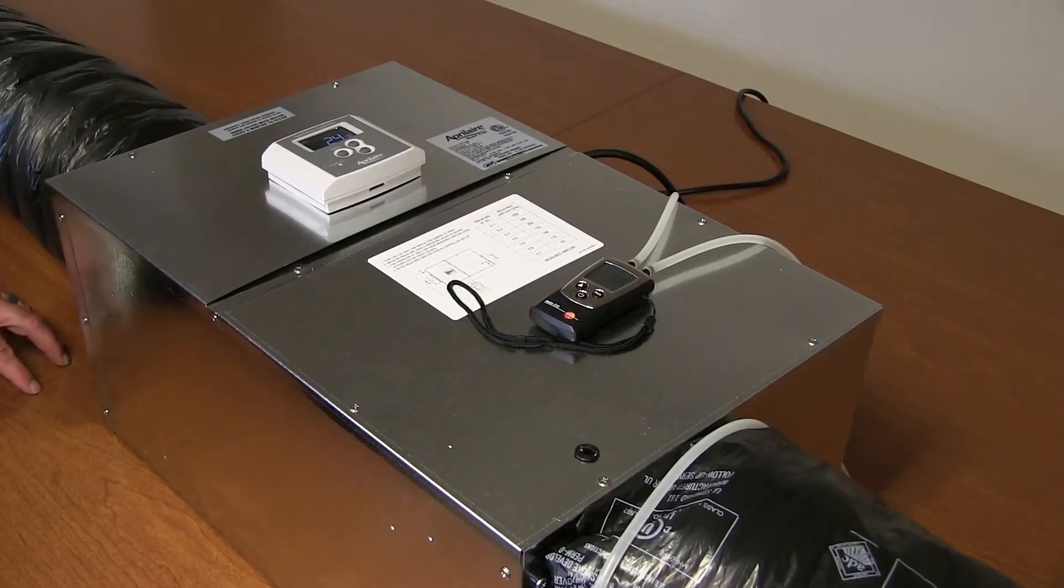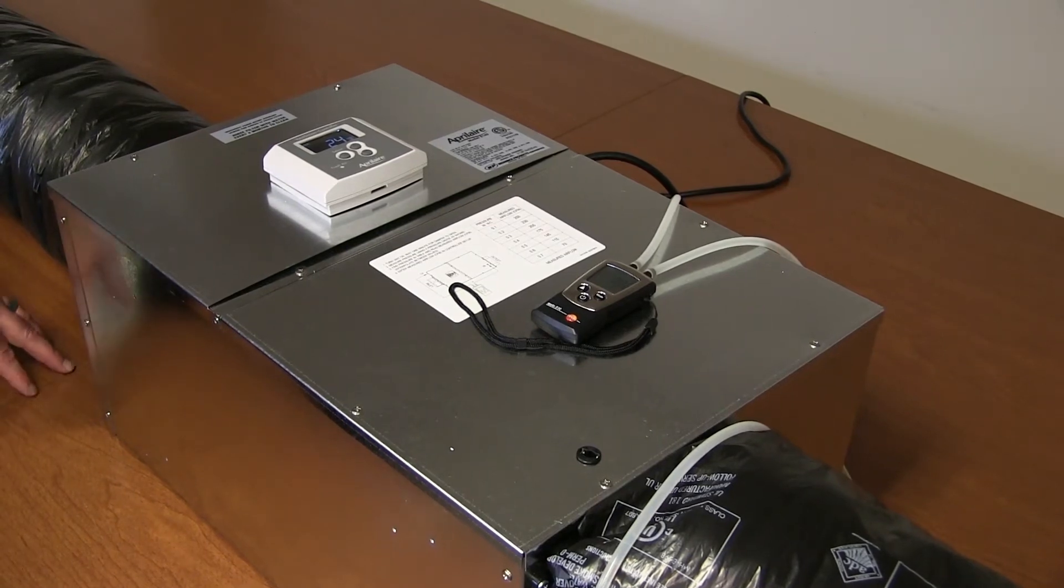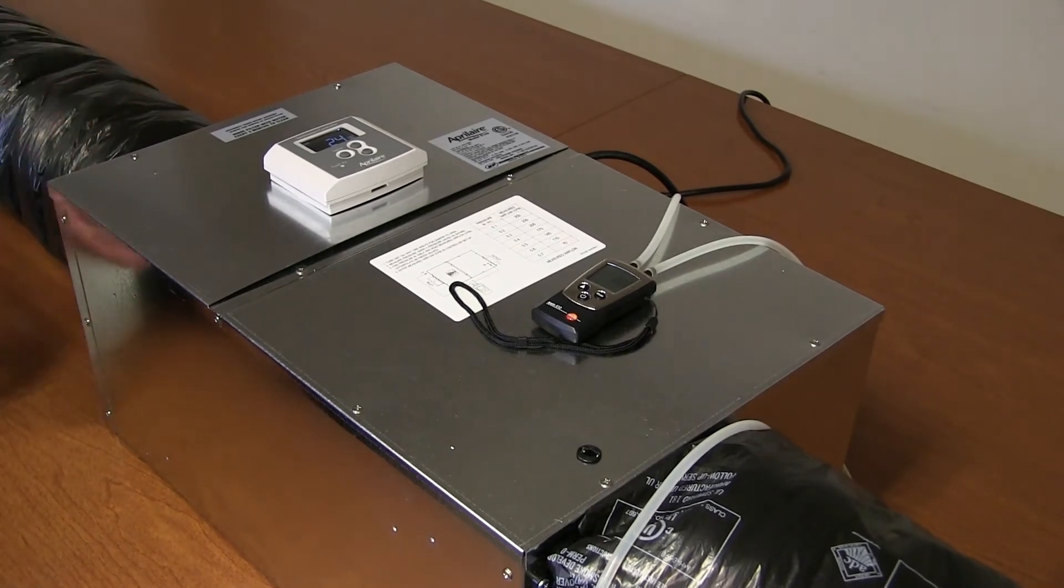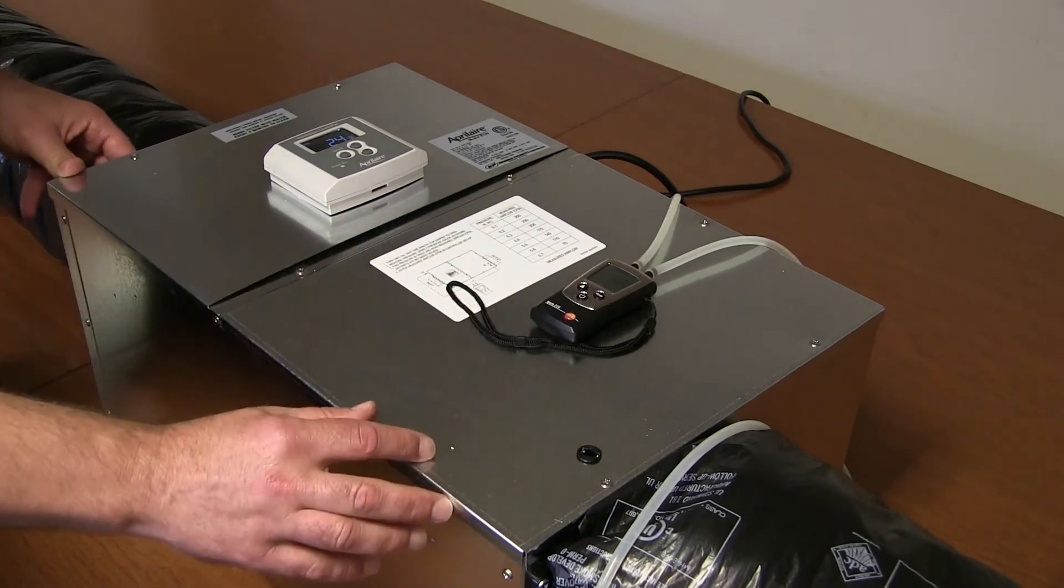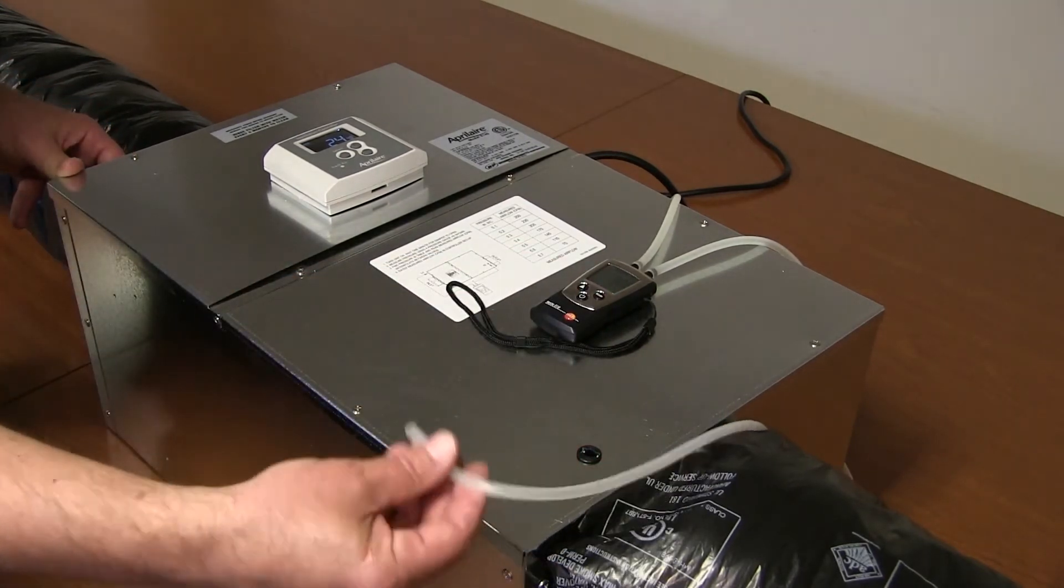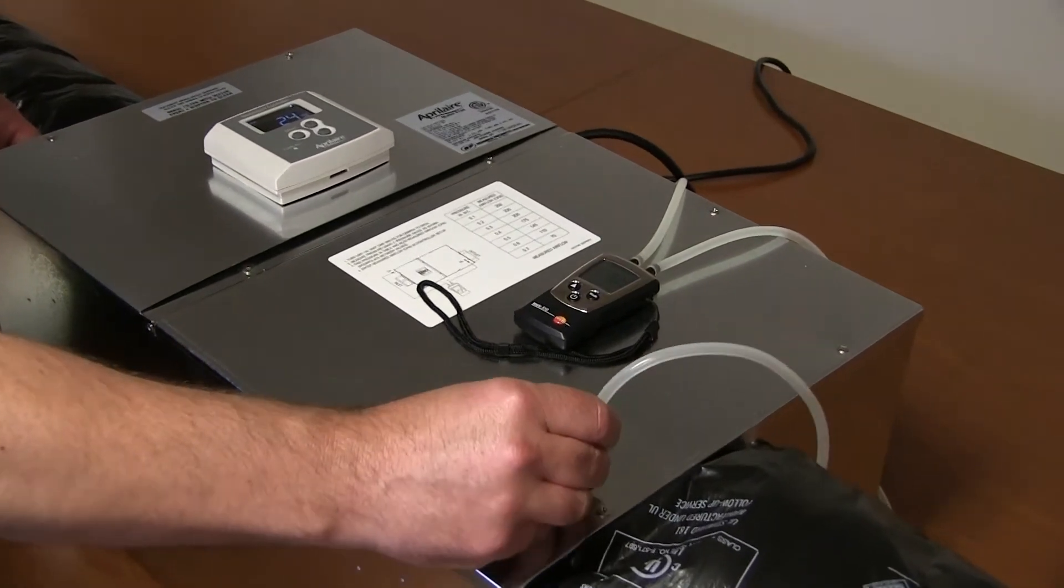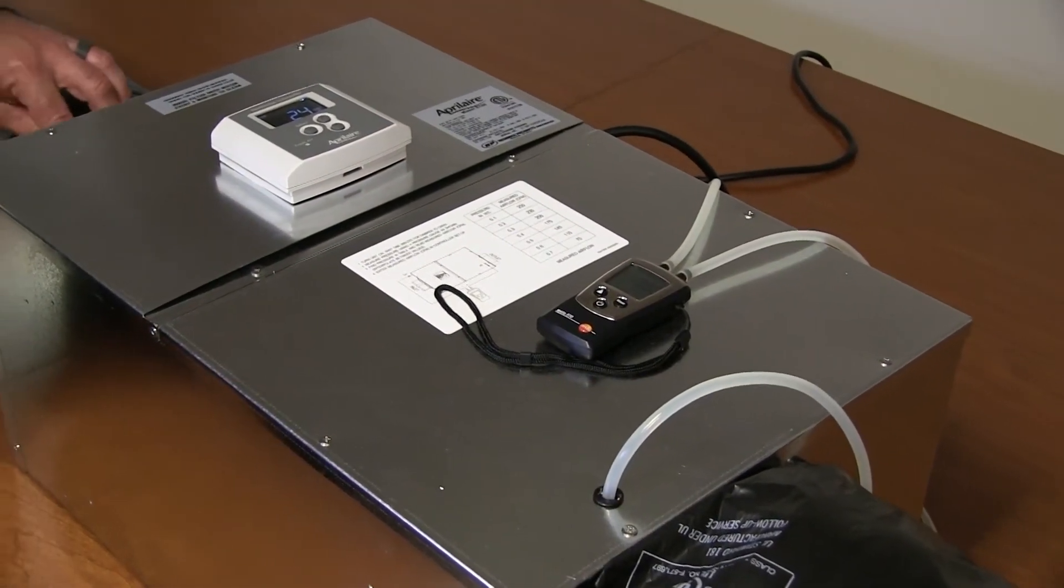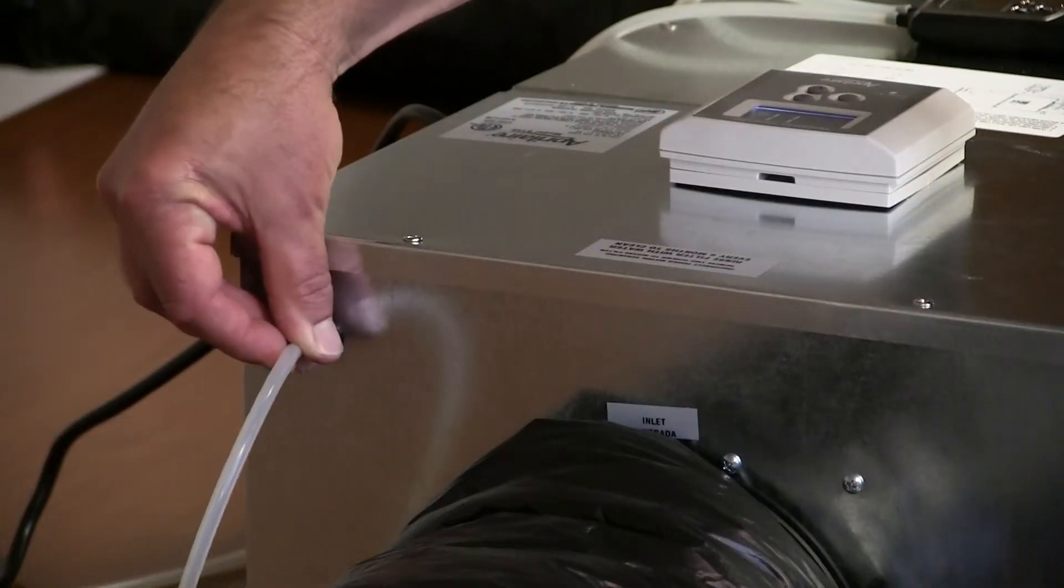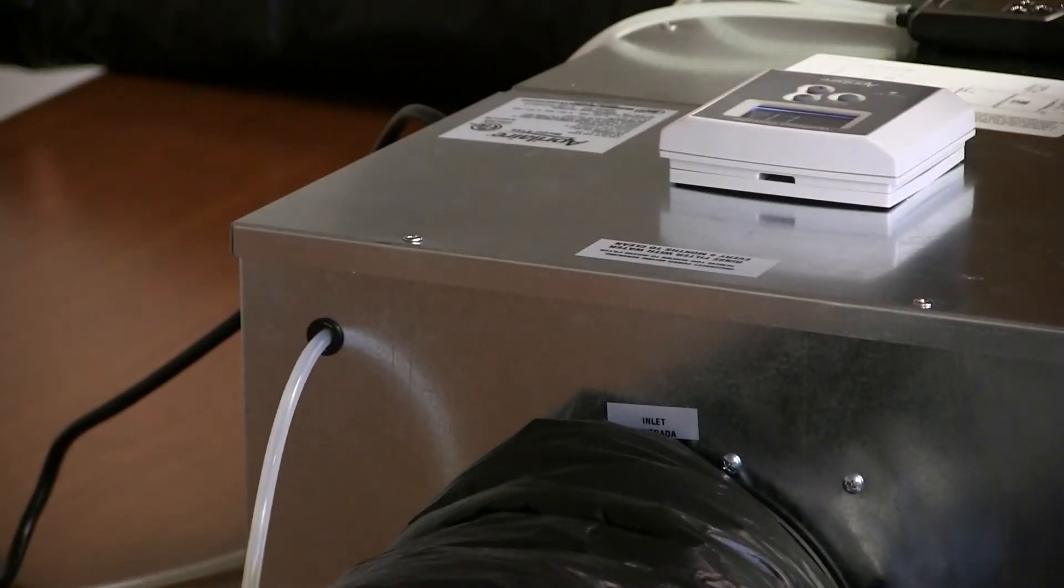All right, so to take airflow measurements with the 8140 after it's been installed is very easy. We're going to use a pressure measuring gauge here, and we're going to take the positive side of the gauge and connect it to the outlet port of the 8140. Then we're going to take the negative side of the pressure gauge and put it to the inlet side port of the 8140.